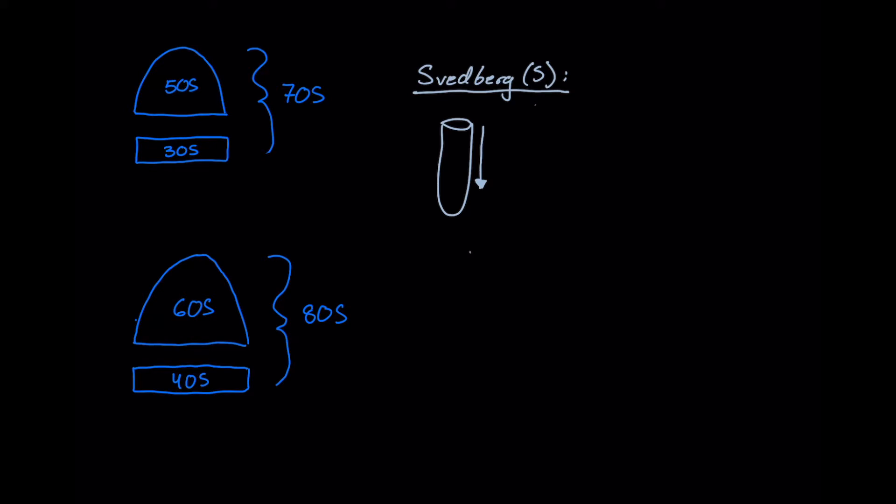What we really need to know for the MCAT though is that big molecules have lots of Svedbergs or have a big sedimentation coefficient. So big molecules, lots of Svedbergs, small molecules, smaller sedimentation coefficient, a smaller value for its sedimentation coefficient measured in Svedbergs.